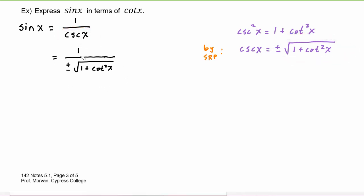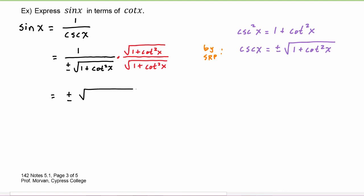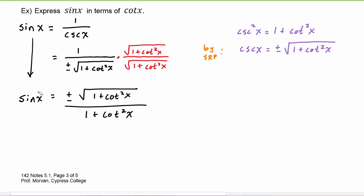We can't leave a radical in the denominator, so we'll have to rationalize this. We multiply by one in the form of the radical one plus cotangent squared of x over itself, and now we get plus or minus the radical one plus cotangent squared of x divided by one plus cotangent squared of x. We can bring down the sine of x, and now we have expressed sine of x in terms of cotangent of x.